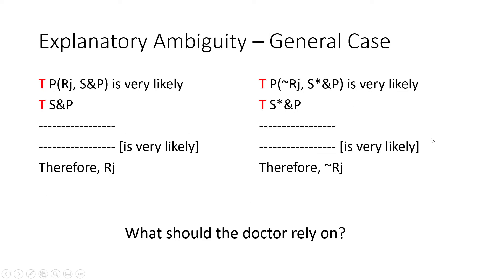Now let's look at where explanatory ambiguity comes in, because John is a very unfortunate individual. He does not only have a streptococcus infection — he has a penicillin-resistant strand of the illness. We can now make a separate argument, shown on the right side, which states that people who have the resistant strain of streptococcus and are treated with penicillin are actually very likely to not recover from their infection. So we now have two competing arguments: one which infers a high probability of John's recovery, and one which infers a high probability of non-recovery. This is the explanatory ambiguity which haunts inductive statistical explanations.